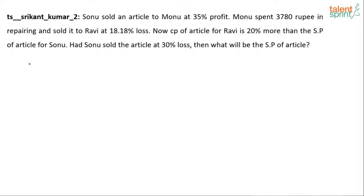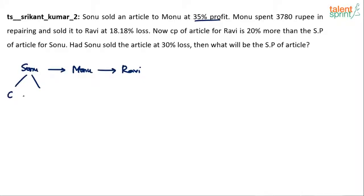The article moves from Sonu's hands to Monu's hands and then from there it goes to Ravi. Each person will have a cost price and selling price. Let's assume Sonu's cost price is C. He sold the article to Monu at 35% profit, so his selling price will be 1.35C — that is C plus 35% of C, which makes it 1.35C.